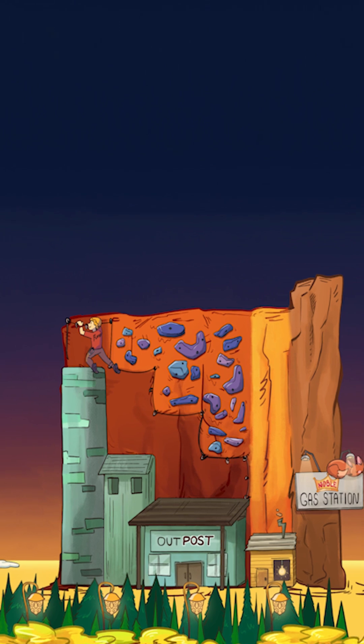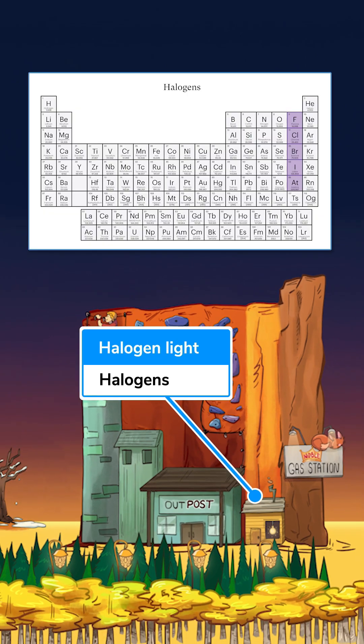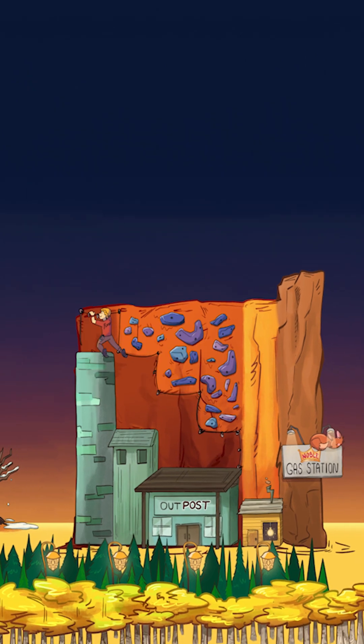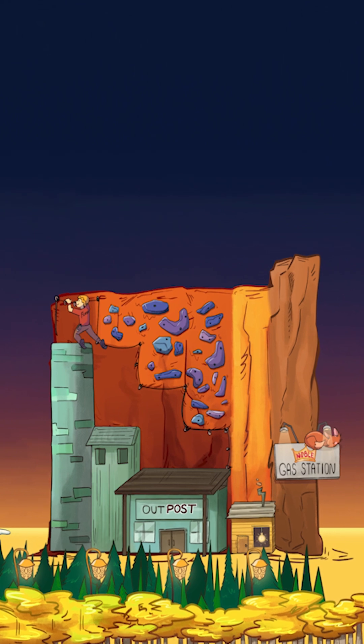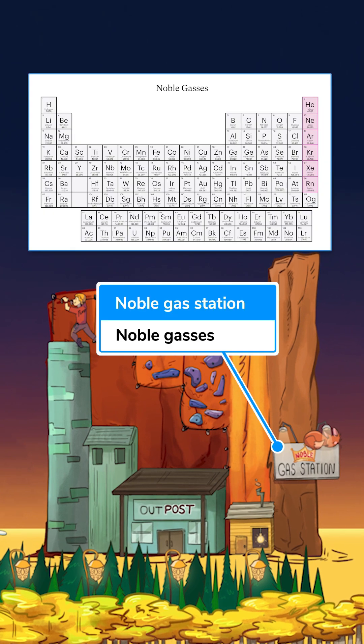Group 17 is a category of nonmetals called halogens, so we have a halogen lightbulb lighting up this shack. And group 18 consists of the noble gases, which is why we have a billboard here advertising the noble gas station.